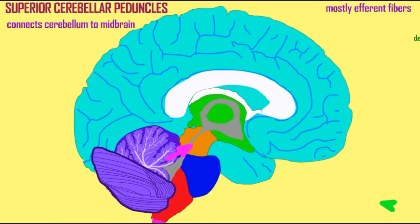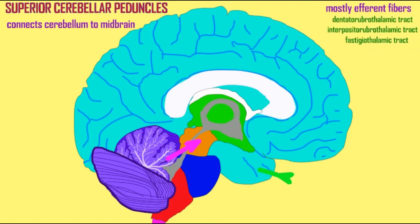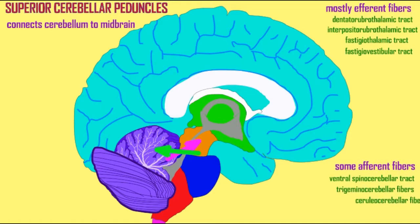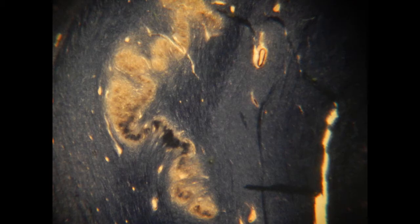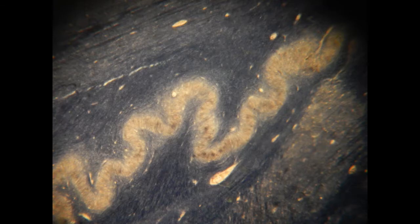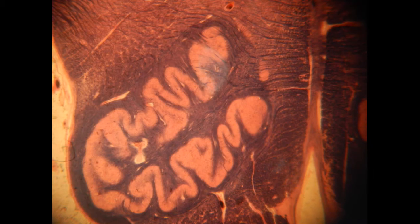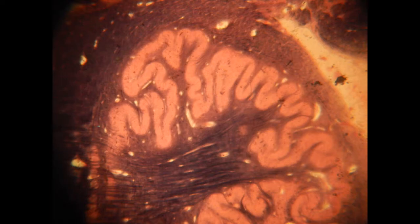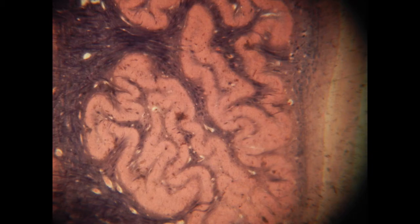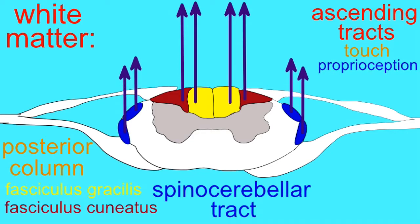The superior cerebellar peduncles connect the cerebellum to the midbrain. They contain mostly efferent fibers — outgoing fibers — and thus most of the signals leaving the cerebellum travel through the superior cerebellar peduncles. The various tracts are named for the deep cerebellar nuclei where they originate. For example, the dentate nucleus is the origin for the dentatorubrothalamic tract, originating in the dentate nucleus of the cerebellum and then projecting to the red nucleus and the thalamus. There are also afferent fibers which enter the cerebellum through the superior cerebellar peduncles, such as the ventral spinocerebellar tract.